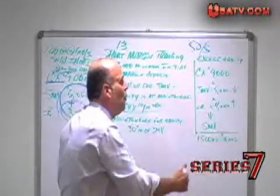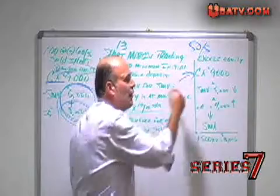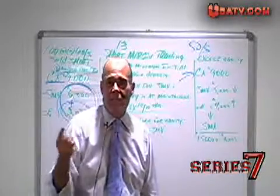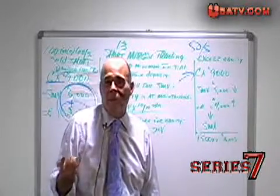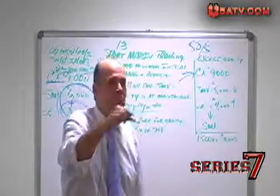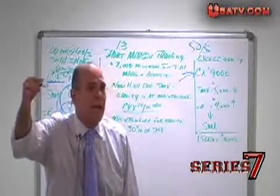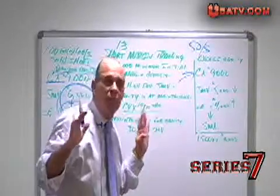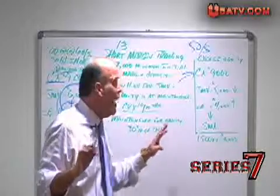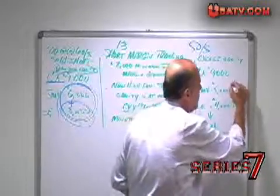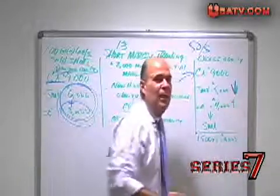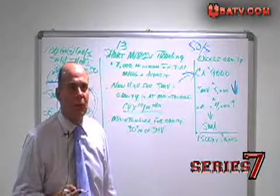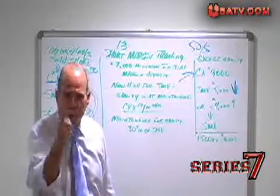Increases or decreases in the short market value don't affect the credit balance. The credit balance, like the debit balance on the long side, is constant. It only moves when you short new stock. We're not shorting any more new stock — all that happened was the stock price went down. Any price the stock trades below $60 a share, you have the capacity to cover and make money.